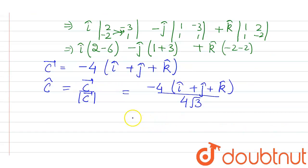So that comes out to be the answer will be minus i cap plus j cap plus k cap divided by root 3. That is the answer.